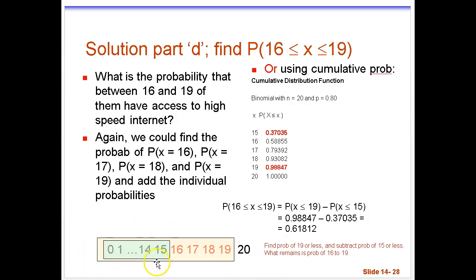All in this number line are basically the numbers that X can take on. So X could be zero households out of 20, 1, 2, 3, 4, all the way up to 20. These are the only possible values of X. We are looking for the probability of 16, the ones in red, 17, 18, and 19. These are four numbers I want probability on.